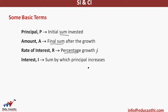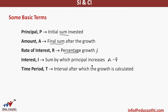Interest is the sum by which the principal increases. You've invested something initially and got your final amount. The difference between the final amount and the initial principal is known as interest — your initial investment has increased by interest. Time period T is the interval after which the growth is calculated, generally in years.